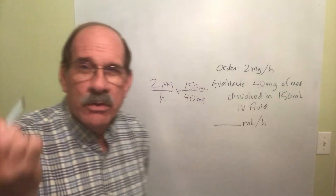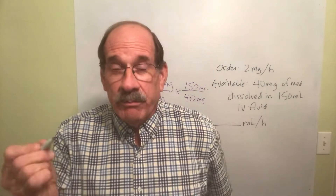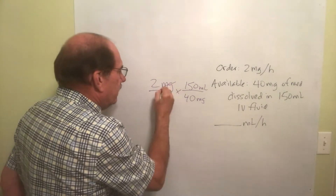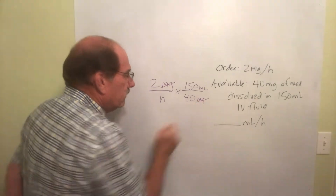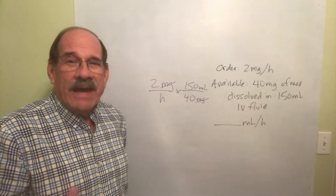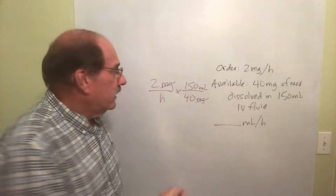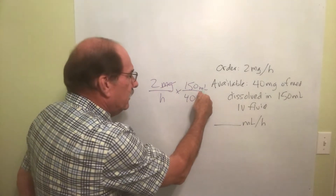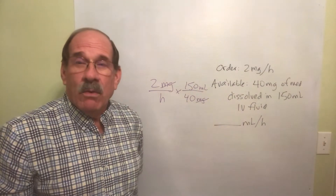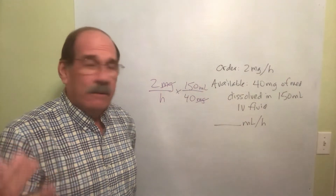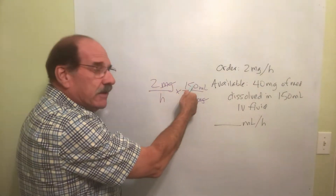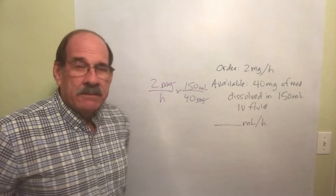So I've got 40 milligrams dissolved in 150 milliliters of IV fluid. Now cancel out what you can — use your pencil, pen, or whatever you're using to cancel out the matching units, because they're gone. What's left is milliliters per hour, which is what I'm looking for.